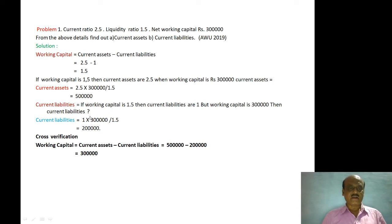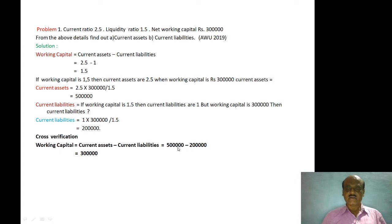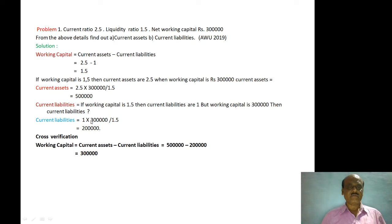Current Assets is 5 lakh and Current Liabilities is 2 lakh. Cross-verification: Working Capital equals Current Assets minus Current Liabilities. Current Assets is 5 lakh minus Current Liabilities 2 lakh equals 3 lakh. So 3 lakh is the Working Capital — this matches our given data. The Current Assets and Current Liabilities are now ascertained.